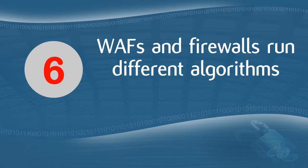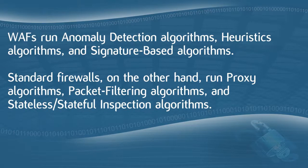The sixth difference is that WAFs and firewalls run different algorithms. Since each differs in design and function, the algorithms they run are also different. WAFs run anomaly detection algorithms, heuristic algorithms, and signature-based algorithms. Standard firewalls, on the other hand, run proxy algorithms, packet filtering algorithms, and stateless and stateful inspection algorithms. These algorithms essentially define the key roles that each plays in the network.